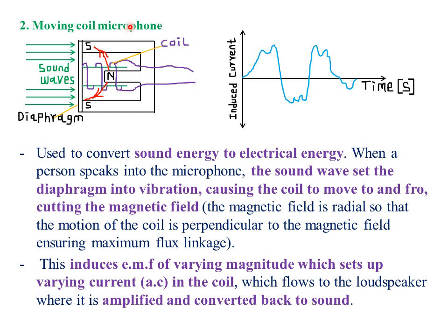Our first application was in transformers, whereby we looked at the different types of transformers, for example the step-up and the step-down transformers. So today we are looking at the second application of electromagnetic induction. The second application is in the moving coil microphone — the usual microphones that you use in public address systems. So the main features of a moving coil microphone: